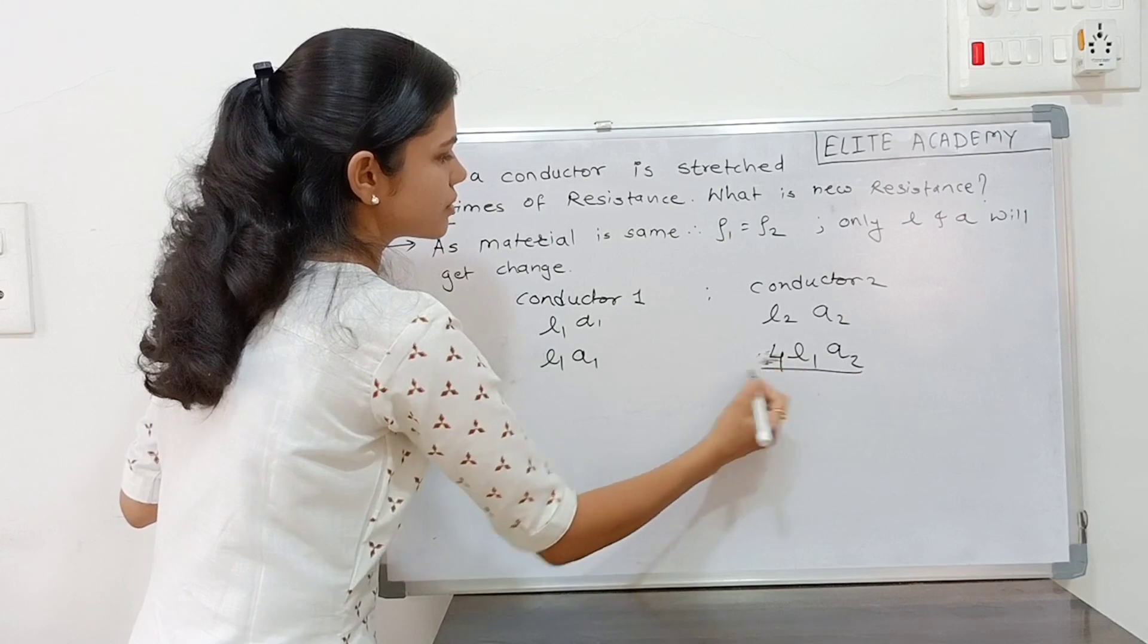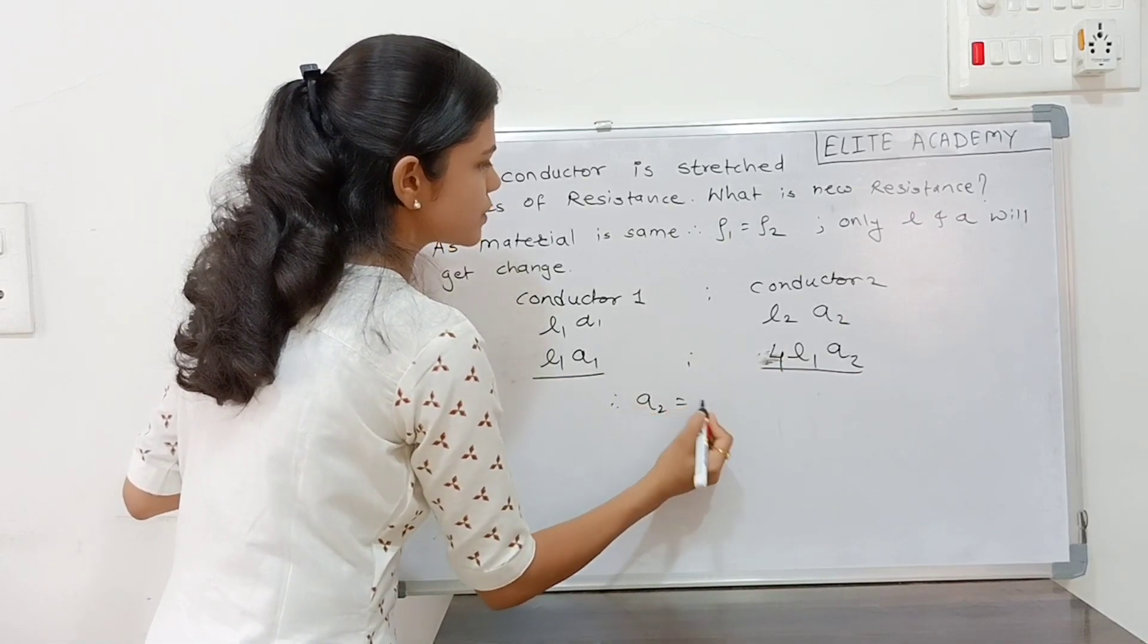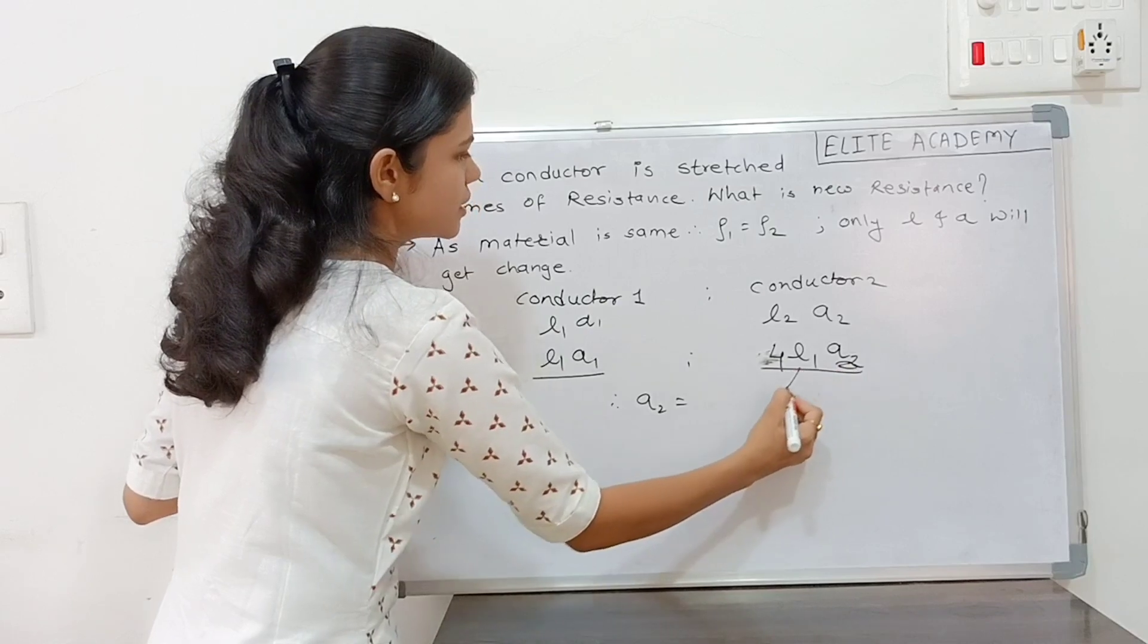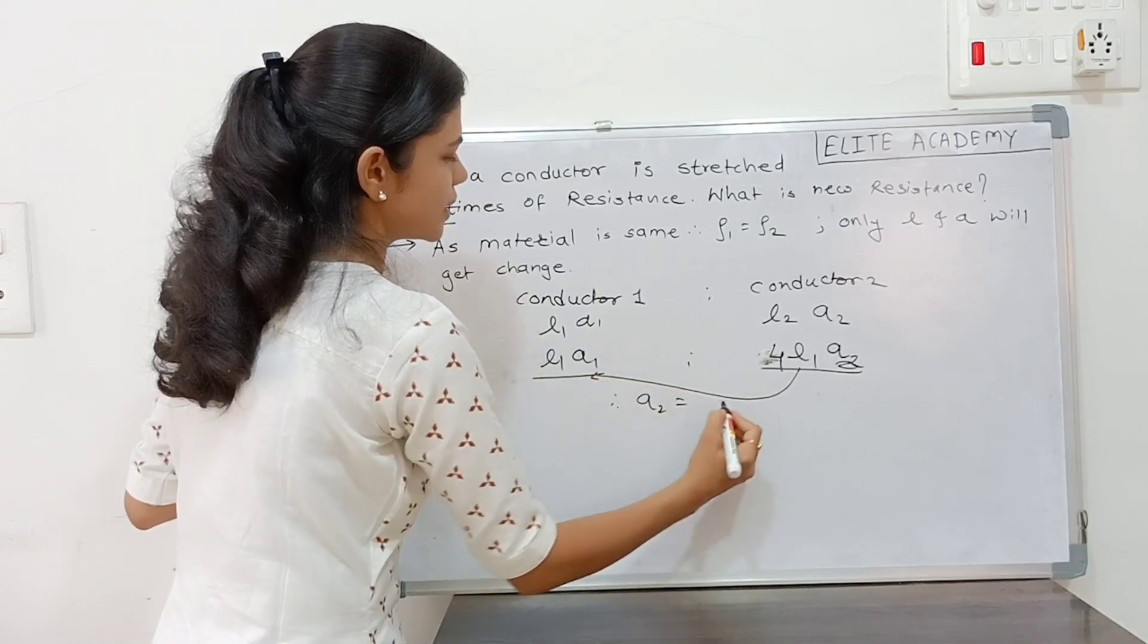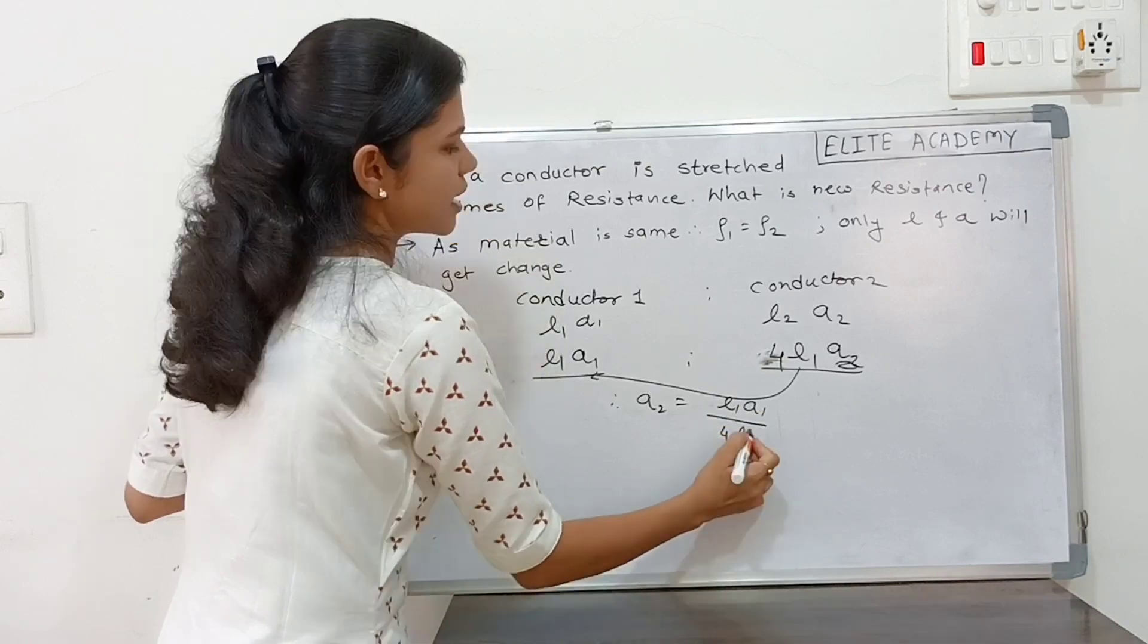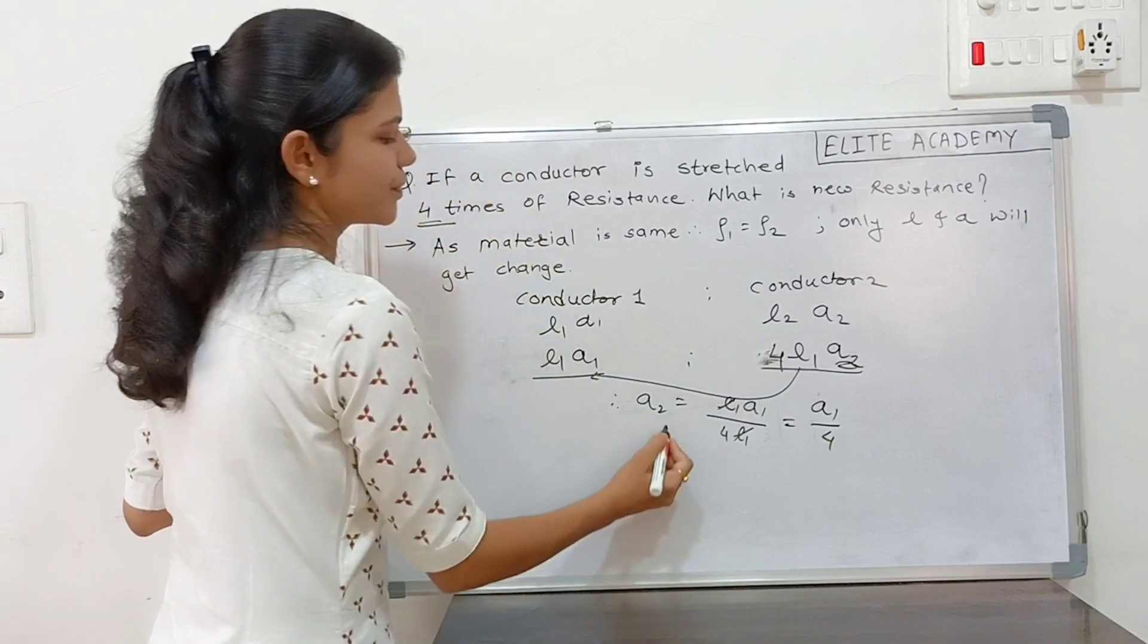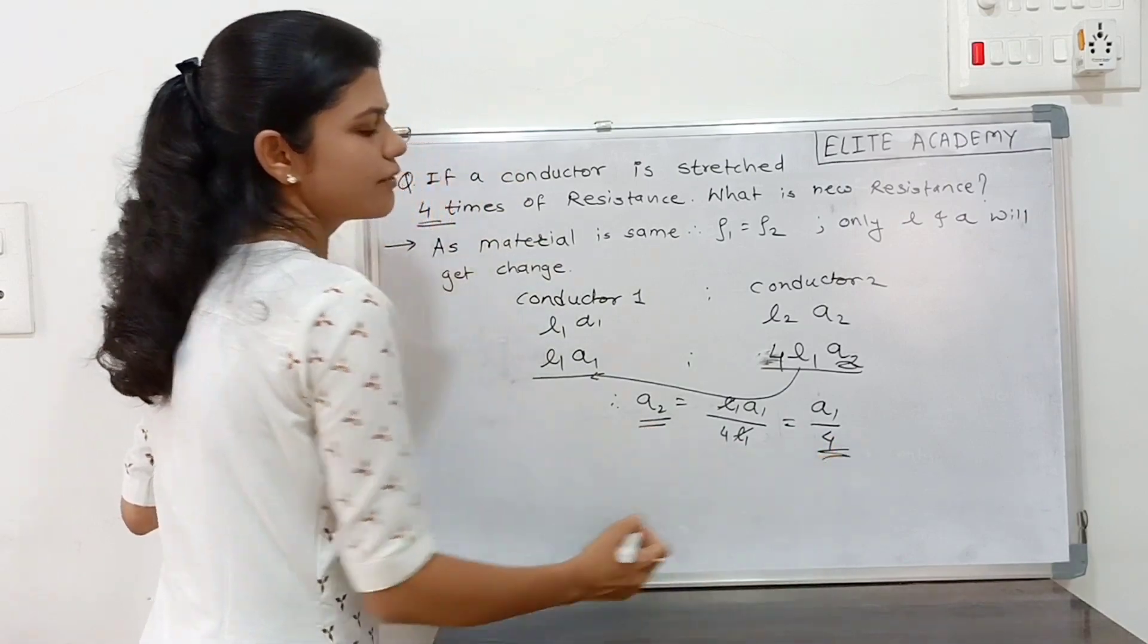From this take a cross multiplication. Therefore, A2 is equal to A2 remains here. This will go over here. L1, A1 upon four times of L1. L1, L1 will get cancelled. A1 upon four. A2 is equal to A1 upon four.